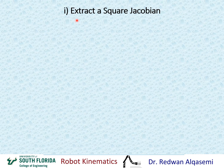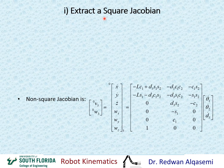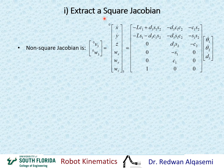Moving to part I — extract a square Jacobian. We need to extract a square Jacobian from the non-square Jacobian. Recalling the non-square Jacobian in reference to frame 0 that we had — this was a 6x3 Jacobian — and we need to extract a square 3x3 Jacobian from it.